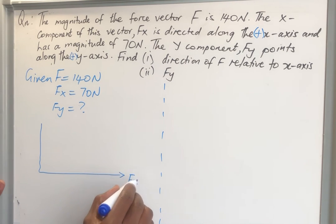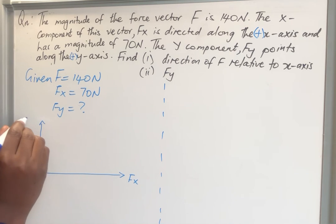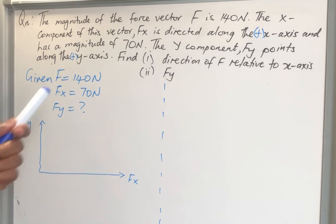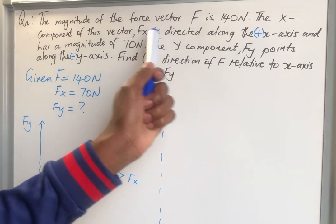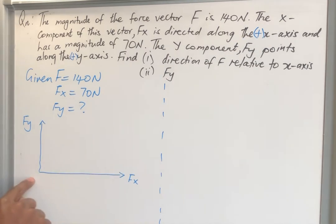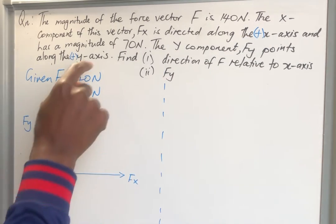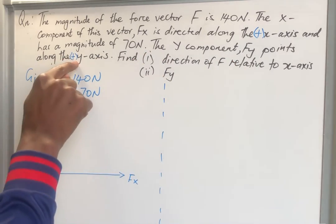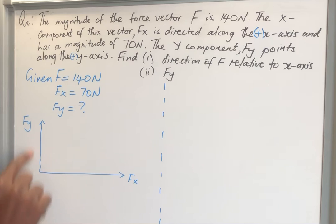This side is going to be Fx and this side is going to be Fy. Why am I choosing my coordinates like this? It's because I'm told that Fx is directed towards the positive x-axis, which is this direction, and Fy is directed along the positive y-axis, which is like this.